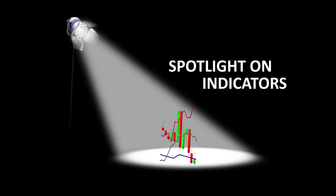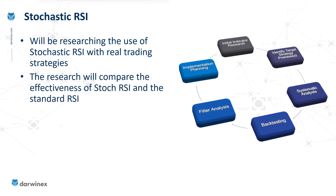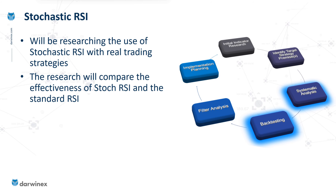This is the Spotlight on Indicators series. To access other episodes, including the one on coding the strategy, you can find a link to the playlist in the video description. We're now well into the process and we've already completed the initial indicator research. We've identified our target strategy premises and initially we're going to be tackling the overbought oversold strategy, comparing the effectiveness of the Stochastic RSI with the standard RSI indicator.